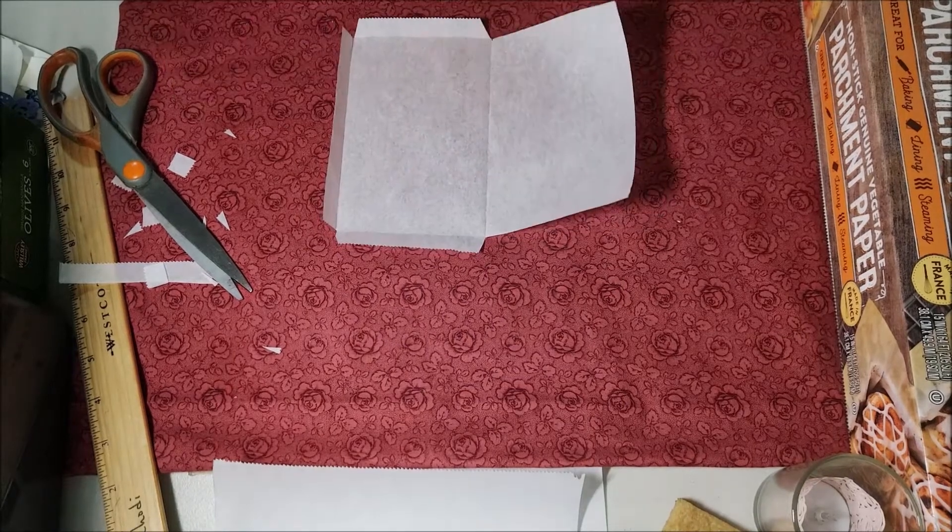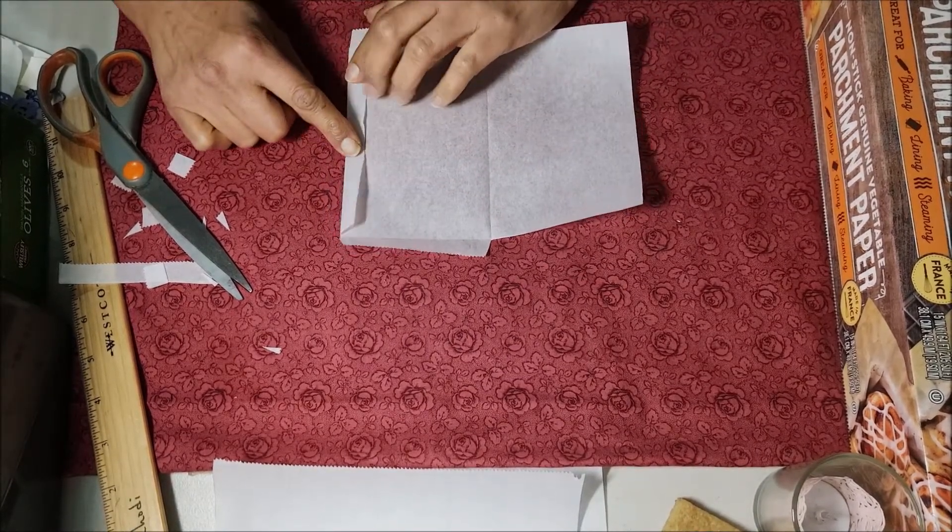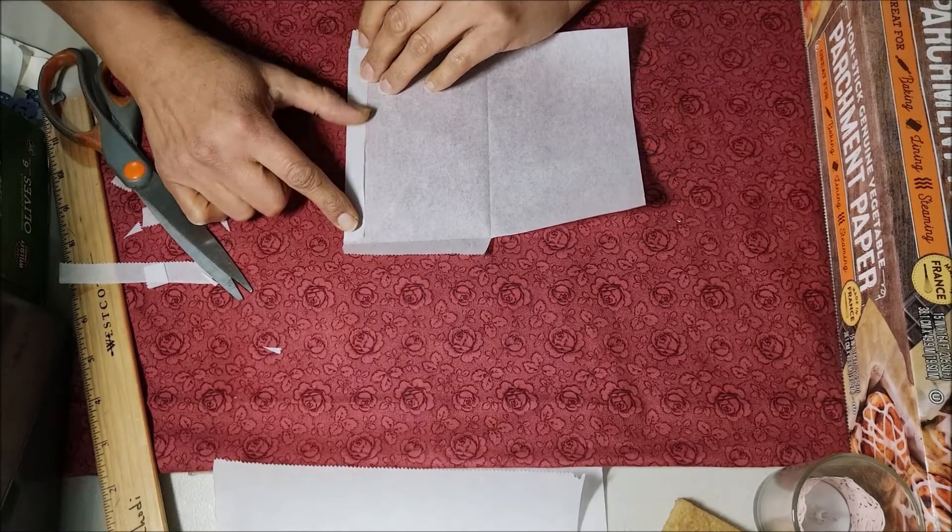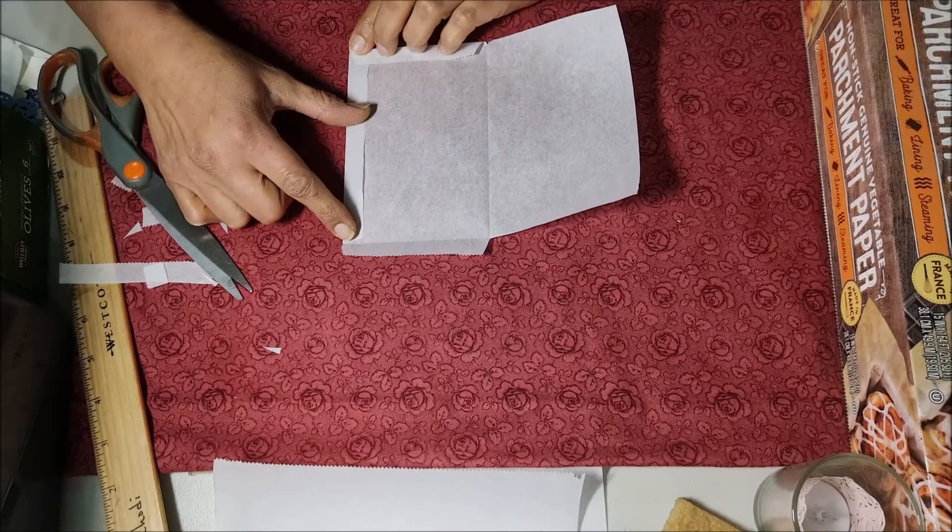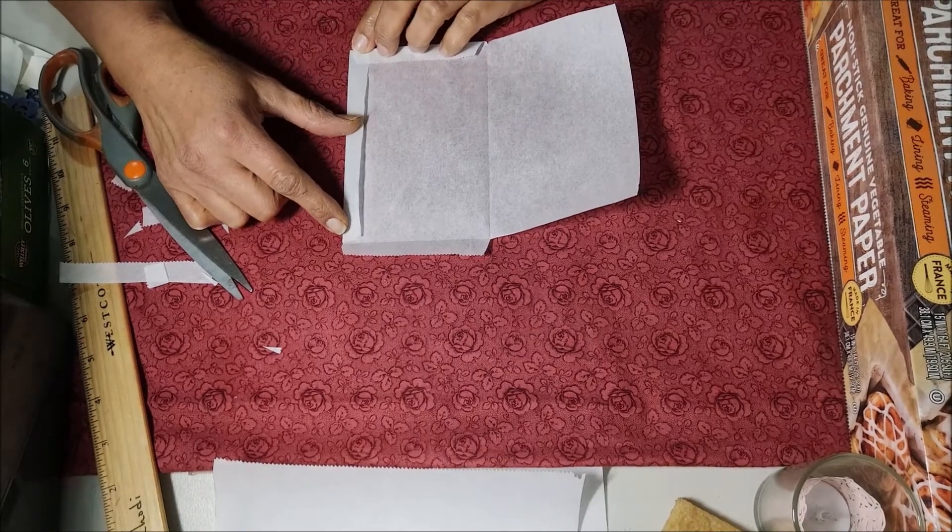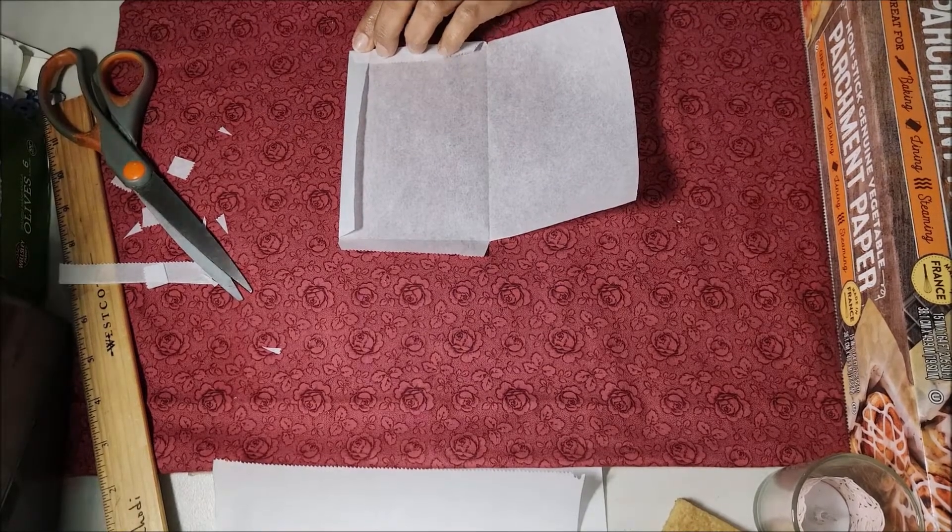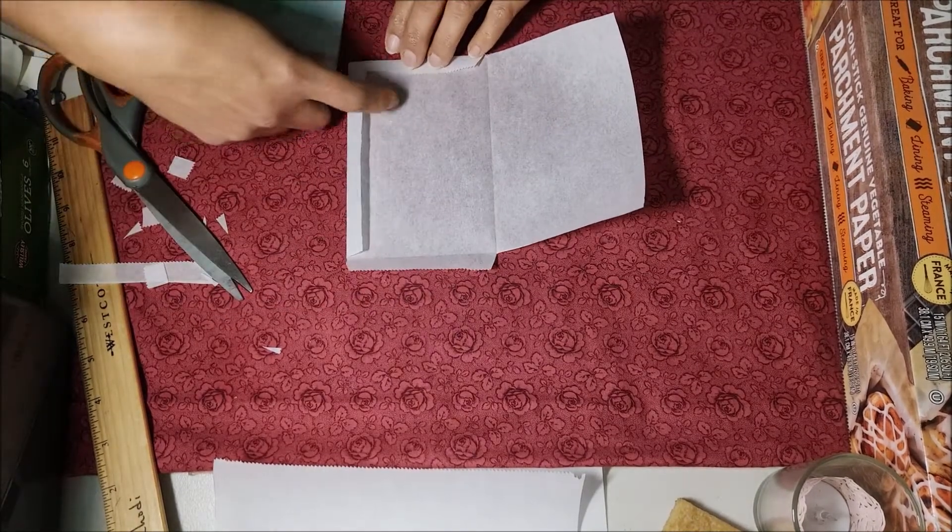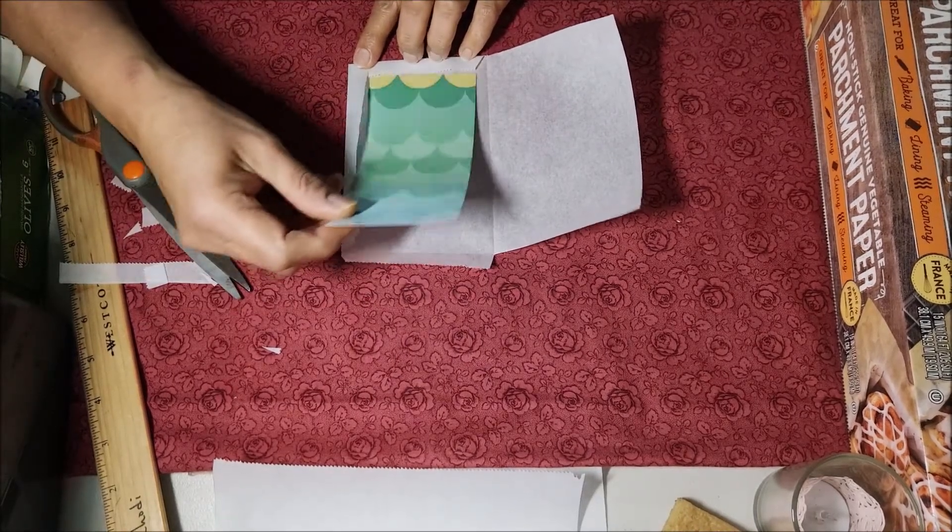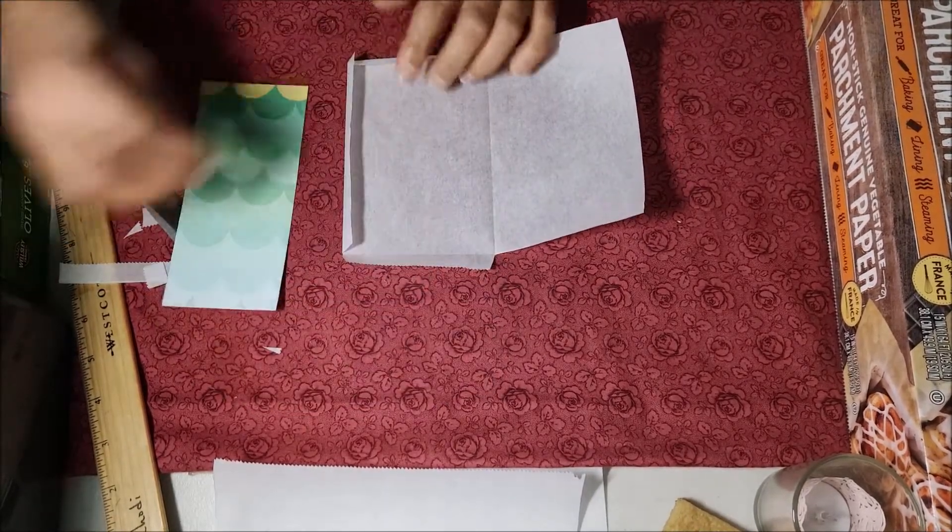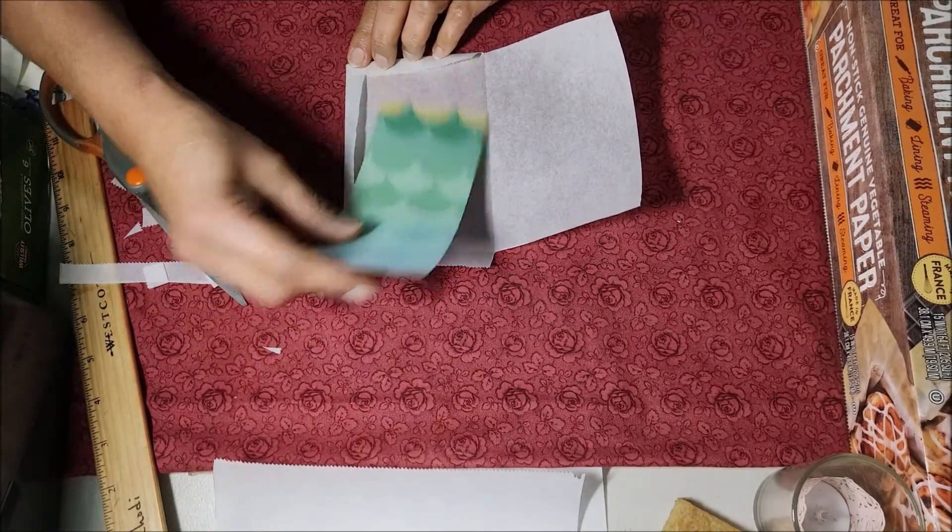Then we fold always first the top part and then the bottom part. This is important because when the little envelope is closed and we are going to want to insert something, if we fold it the other way, then what we insert bumps into it. If we fold it this way, there is a space already created.